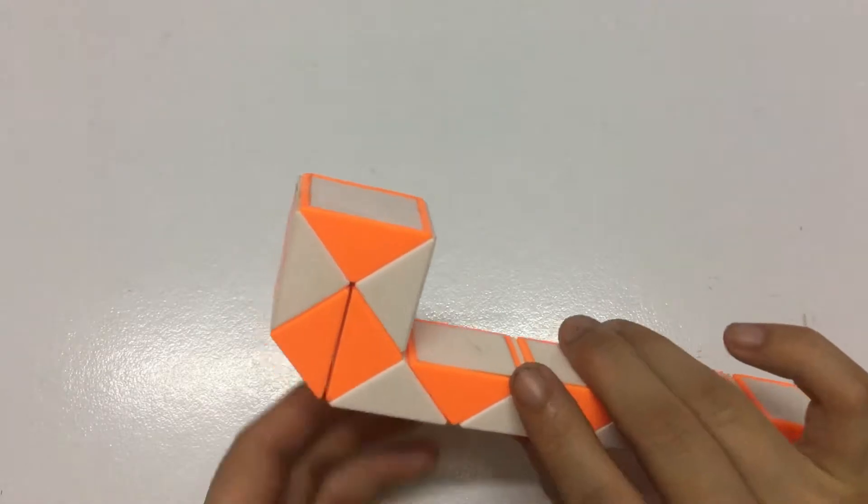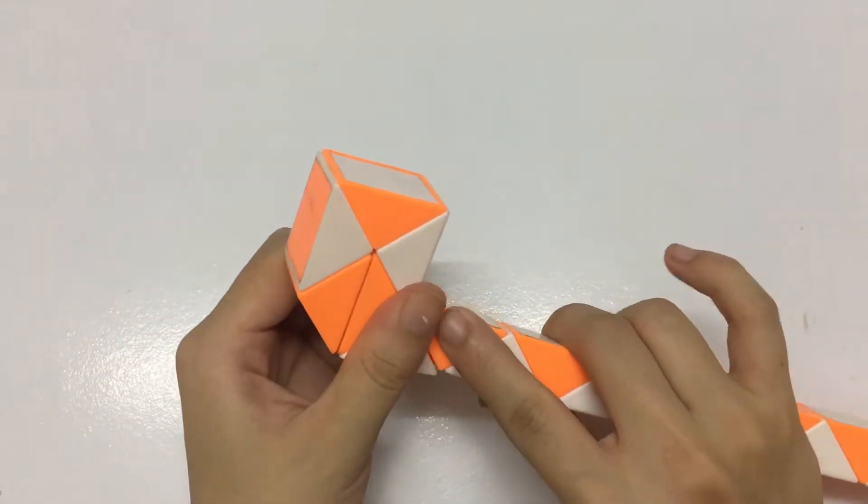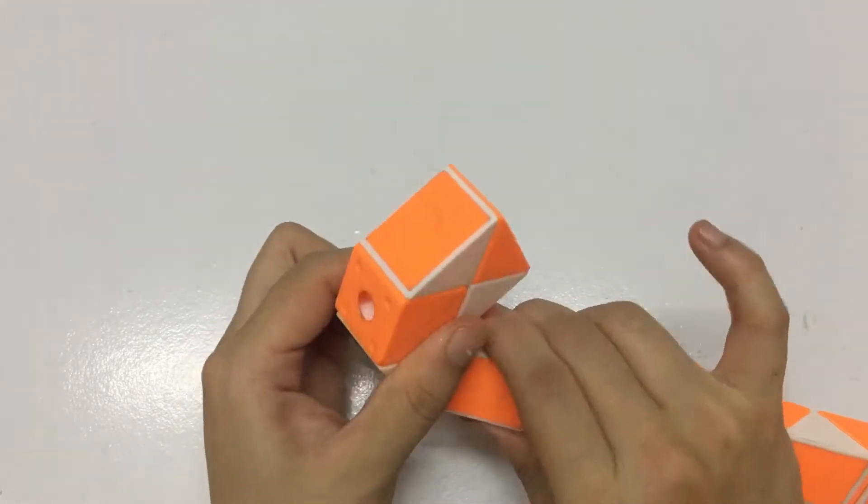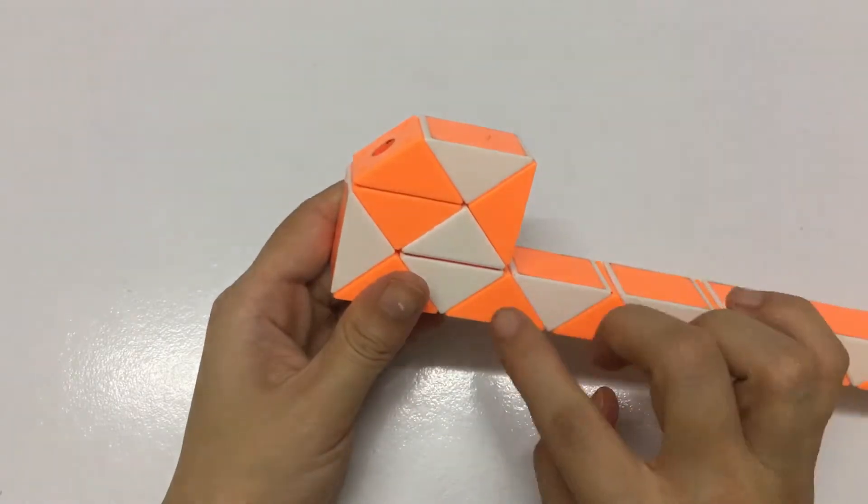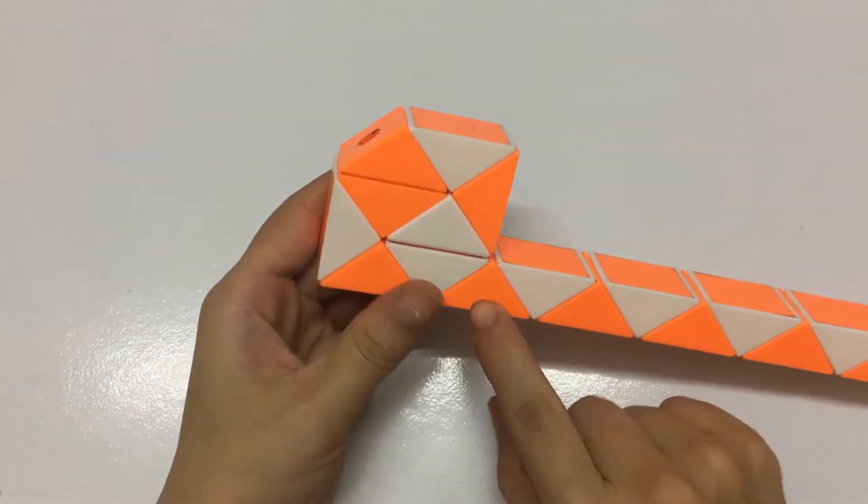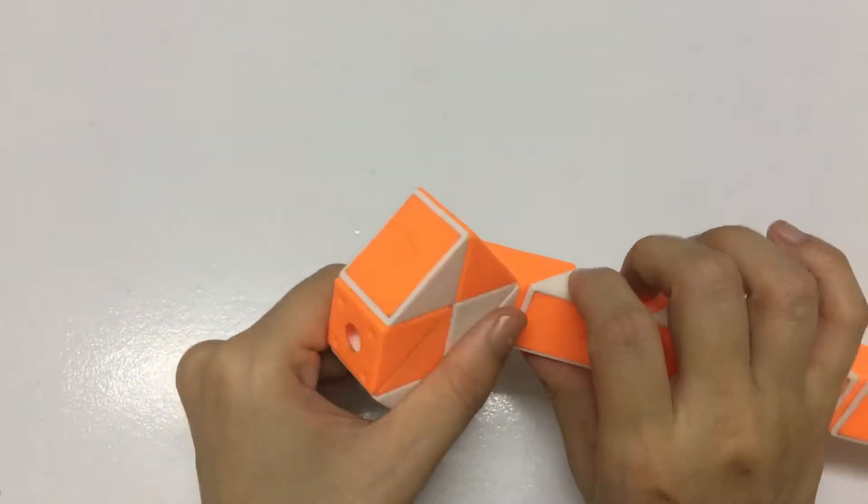So now we put the orange one to the right 2 times. And we do the same with the 2nd orange one. Put it down.